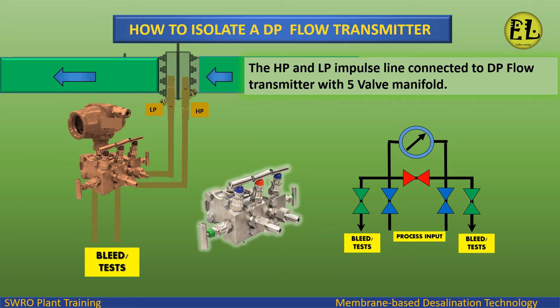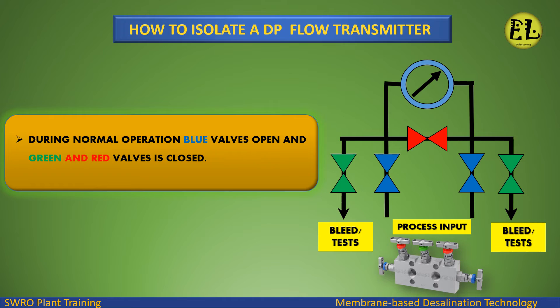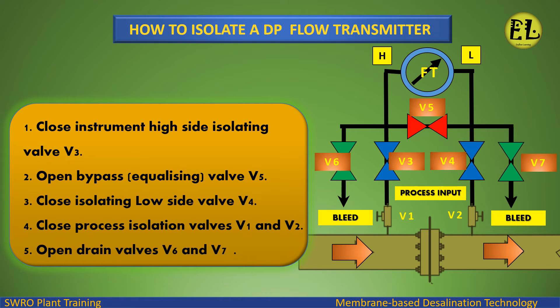The high pressure and low pressure process impulse lines are connected to the DP flow transmitter with a 5-valve manifold. During normal operation, blue valves are open and green and red valves are closed.